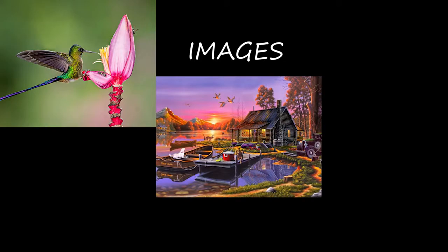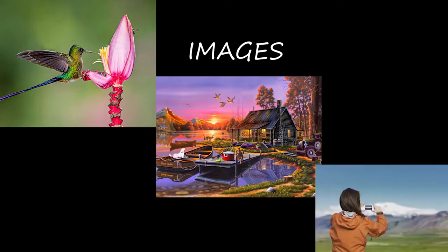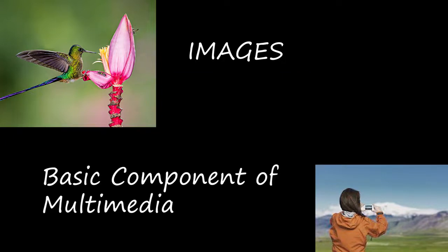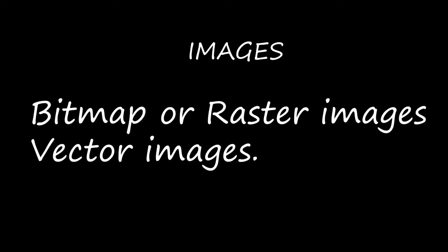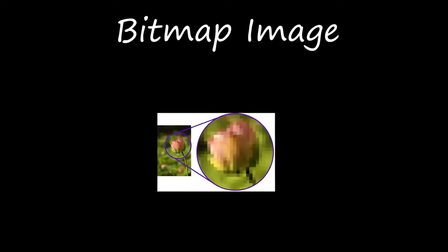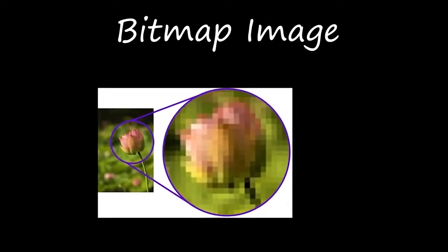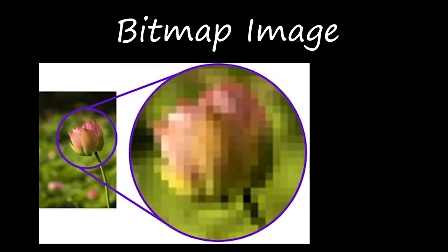Now we are going to see about images. What is an image? When you take a picture, we get an image, or when we draw something, we get an image. Image is the basic component of multimedia. We have two types of images: bitmap images (or raster images) and vector images.